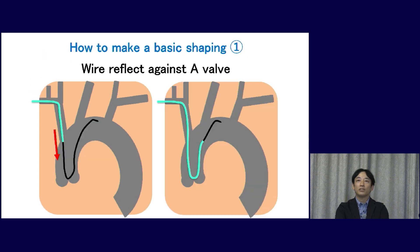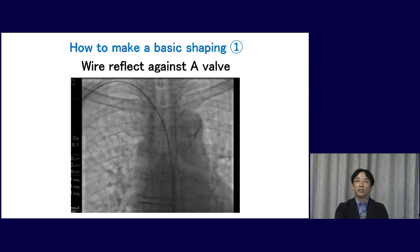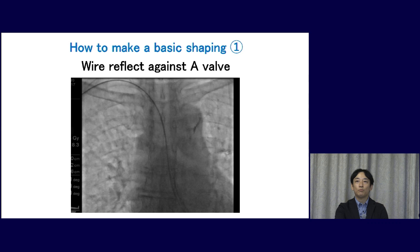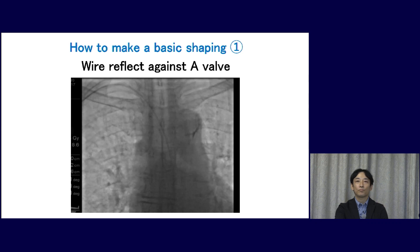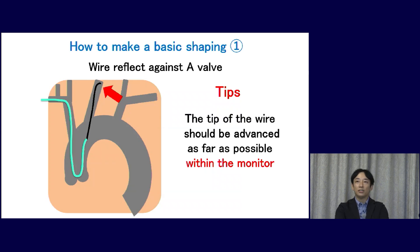The first technique is to reflect the wire against the aortic valve. This is the simplest method of all. In this video, the guide wire is navigated as a J-shape first, and then the Simon's catheter is followed. This is the basic shape of the Simon's catheter. The tip of the guide wire should be navigated as far as possible under fluoroscopic monitoring, and at the same time the tip must not be out of your sight.